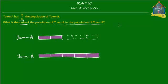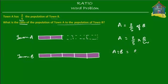What's given to us is that the population of Town A is two-fifths the population of Town B, which means A equals two-fifths times B. If we move B to the other side of the equal sign, this becomes A divided by B equals two over five. So the fraction A over B is equal to the fraction two over five.